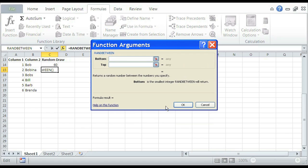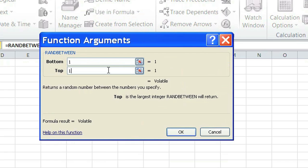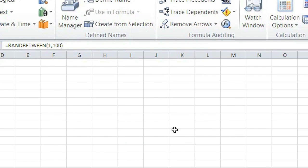Bottom 1, top 100, then OK. And it selected 1.